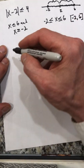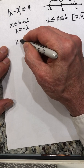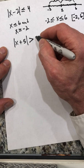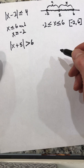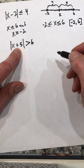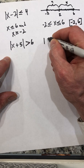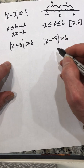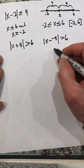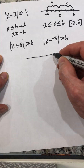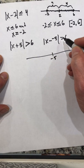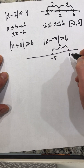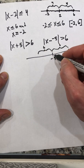Now let's look at the absolute value of x plus five is greater than six. Distance only works with a difference, so I rewrite x plus five as x minus negative five. Now I know one point is negative five, and the distance to x must be more than six. Going right six from negative five reaches one; going left six reaches negative eleven.